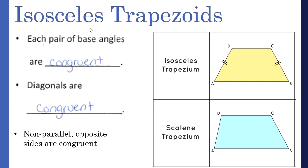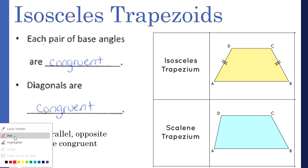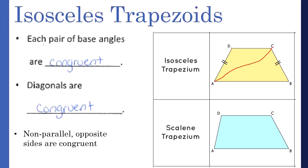In addition to all the properties of a trapezoid, isosceles trapezoids also have congruent diagonals — the length from A to C equals the length from D to B. They also have two pairs of congruent base angles: on the longer base, angles A and B are congruent; on the shorter top base, angles D and C are congruent. Those are the three additional properties that make a trapezoid isosceles.